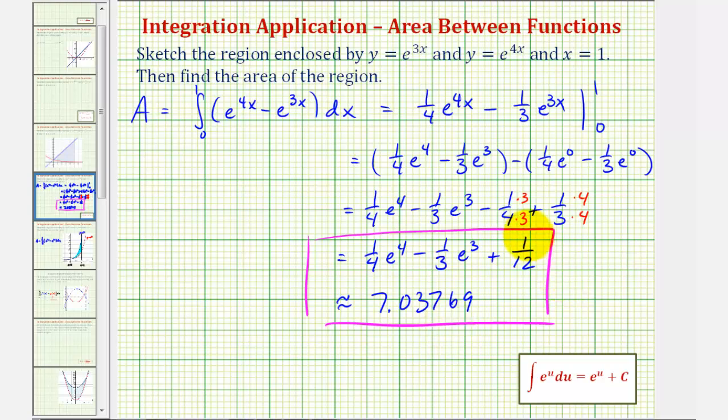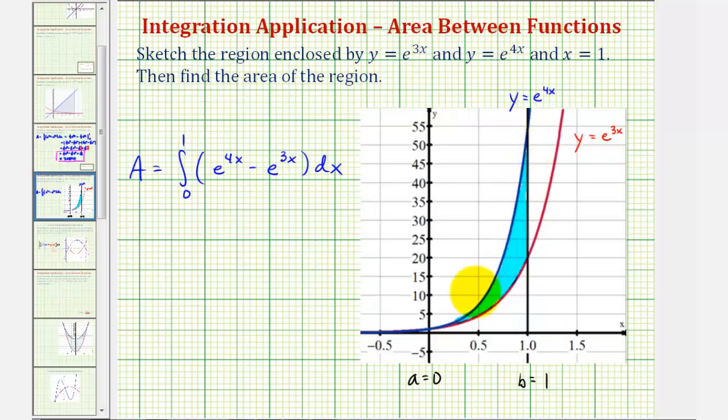So going back to our graph one more time, the area of the shaded region is exactly 1 fourth e to the 4th minus 1 third e to the 3rd plus 1 twelfth. Which means the area is approximately seven point zero three seven six nine square units.